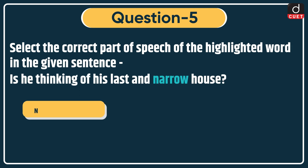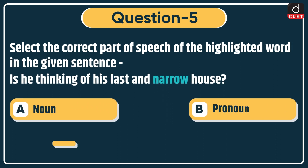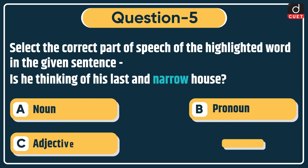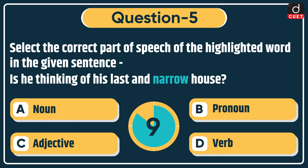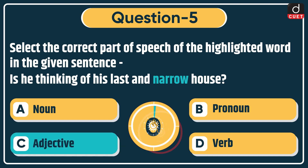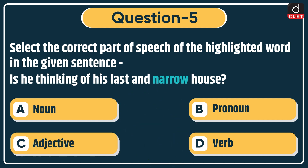Next question: select the correct part of speech of the highlighted word in the given sentence. 'Is he thinking of his last and narrow house?' The highlighted word is 'narrow.' Options: Noun, Pronoun, Adjective, or Verb. The correct answer is option C: Adjective.